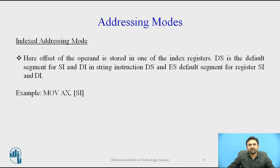The next one is indexed addressing mode. Here the offset of the operand is stored in one of the index registers, and DS is the default segment for SI and DI in string instructions. DS and ES are the default segments for registers SI and DI. For example, we are moving the content from SI to the AX register. The effective address in this mode is the sum of a constant and the specified register. The addressing modes involving SI and DI all use the data segment, while the displacement addressing mode uses the stack segment by default.